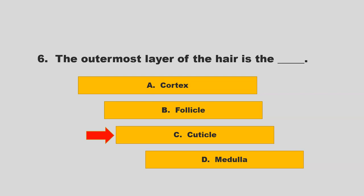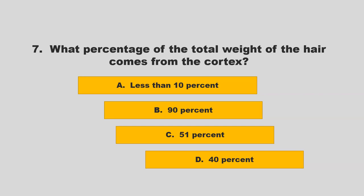What percentage of the total weight of the hair comes from the cortex? Is it less than 10%, 90%, 51%, or 40%? If you chose B, 90%, you are correct.